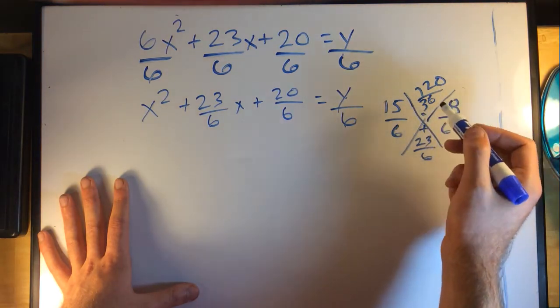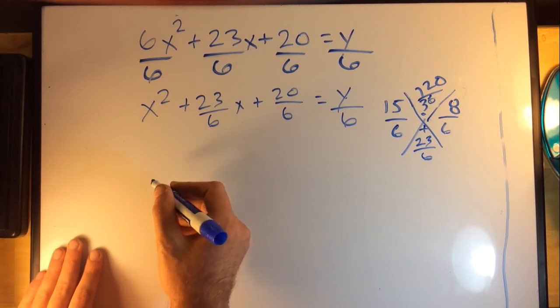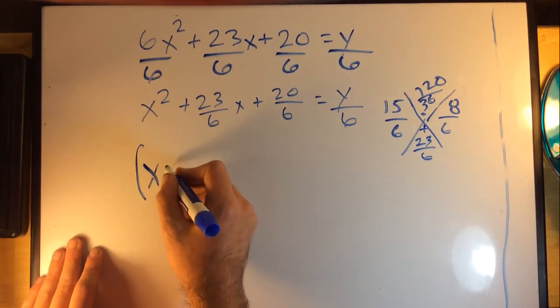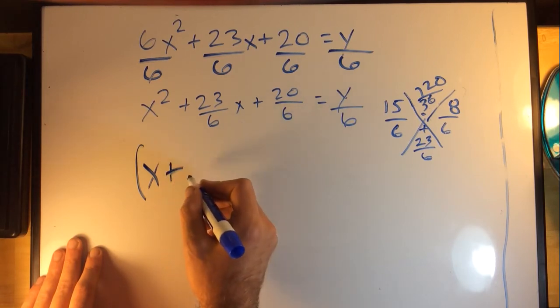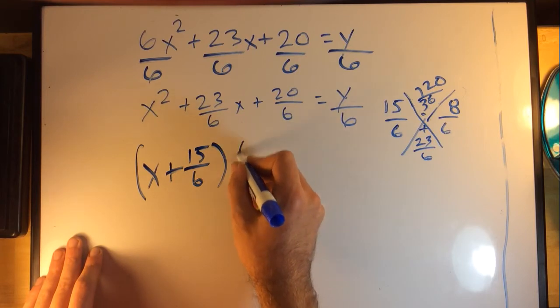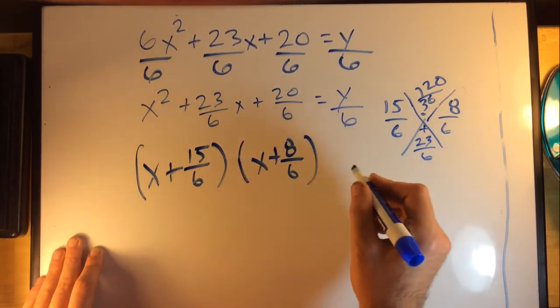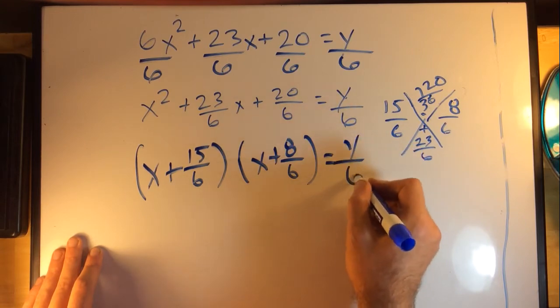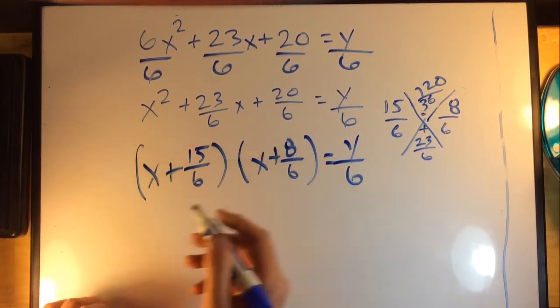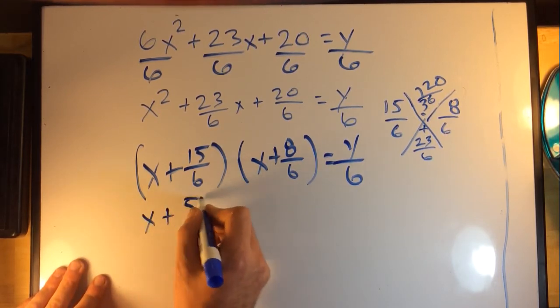Now I can just write this in the way I usually would with a simple leading coefficient of 1 factoring method. I've got (x + 15/6)(x + 8/6) = y/6. I don't know if you can see it, we're actually almost done. I'll just rewrite this in simplified form: (x + 5/2)(x + 4/3) = y/6.